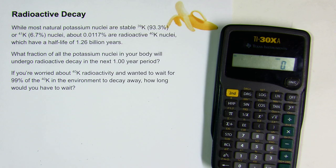The problem reads: while most natural potassium nuclei are stable, potassium-39 or potassium-41 nuclei, there's about one hundredth of a percent of potassium atoms that are radioactive potassium-40 and they will radioactively decay. They have a half-life of 1.26 billion years. So the question is, what fraction of all the potassium nuclei in your body will undergo radioactive decay in the next one year period?